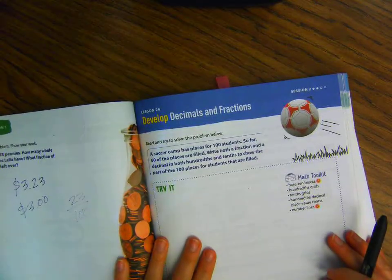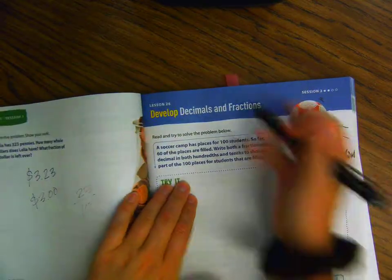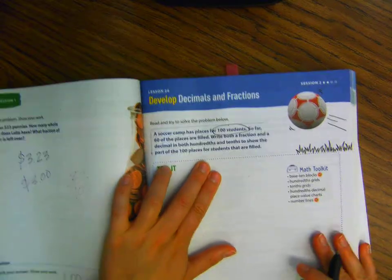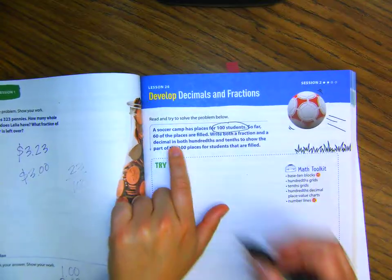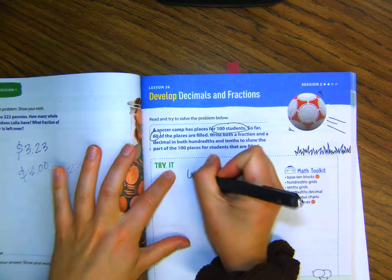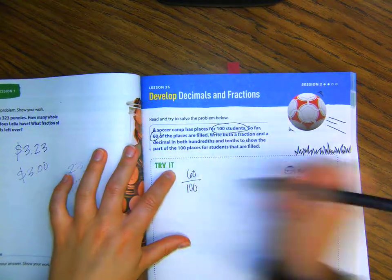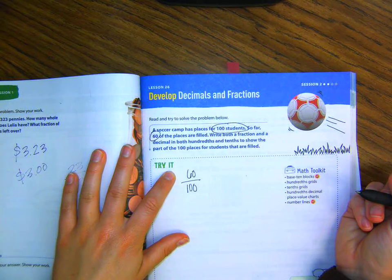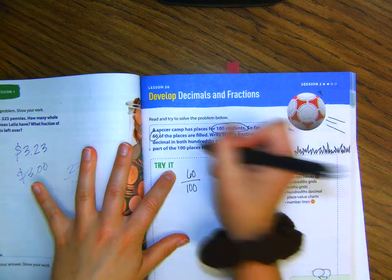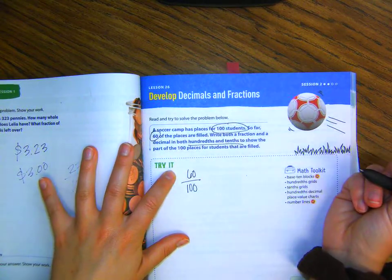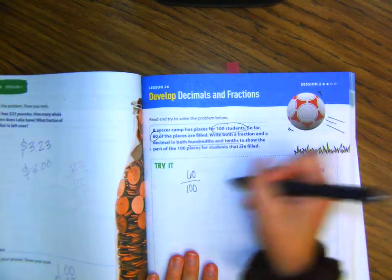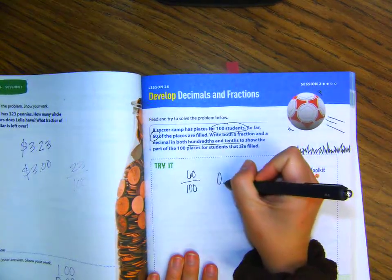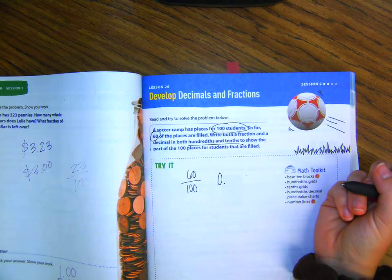So, let's do a different one. A soccer camp has places for 100 students, so they can take 100 students. So far, 60, let me turn my lamp on, of the places are filled. So 60 of the 100 spots are filled. Write both a fraction and the decimal in both hundredths and tenths to show the part of 100 places for students that are filled. So, if I'm just going to put this as a decimal, it's not even one whole, because that would be the whole camp would be filled up if it was one whole.